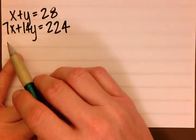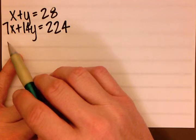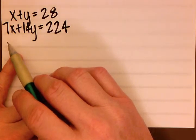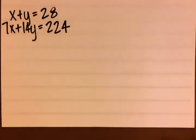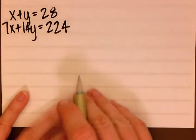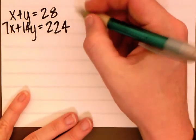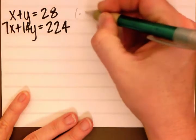Now we're going to use a process of elimination to solve for the variables, which means we'll be able to solve for the amount of solution that we need. We have x plus y equals 28 and we have 7x plus 14y equals 224. So what we want to do is take that first formula and multiply it by negative 7.